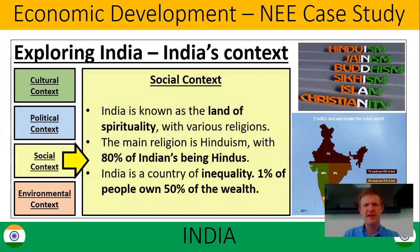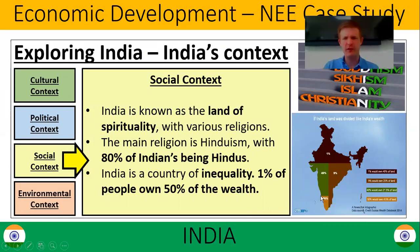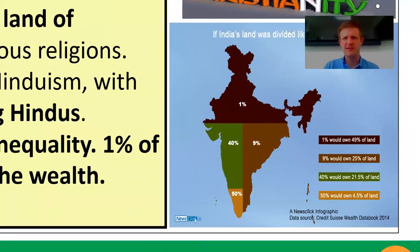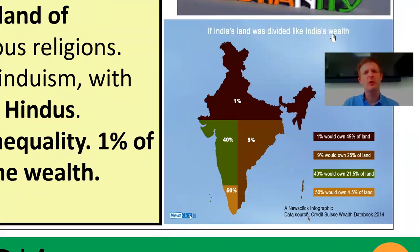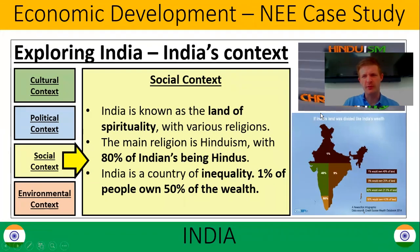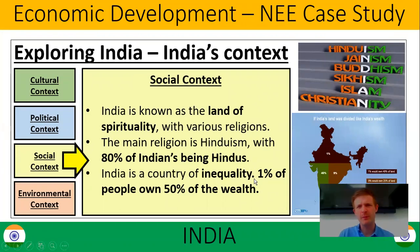Moving on to social context. The people of India are very spiritual — 80% of them are Hindus, but there are other religions in India as well. As mentioned last lesson, India is a country of inequality: 1% of people own 50% of the money. You can see on the PowerPoint that if India's land was divided up as wealth, 1% of people would own half of India, whereas 50% of people would own only a small proportion. The wealth is very unequally distributed, and 20% of people still live in extreme poverty without enough food, water, or shelter over their head.